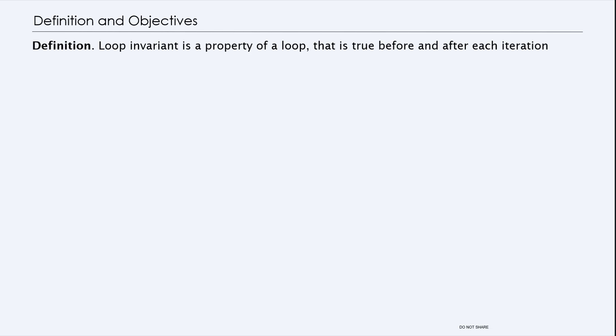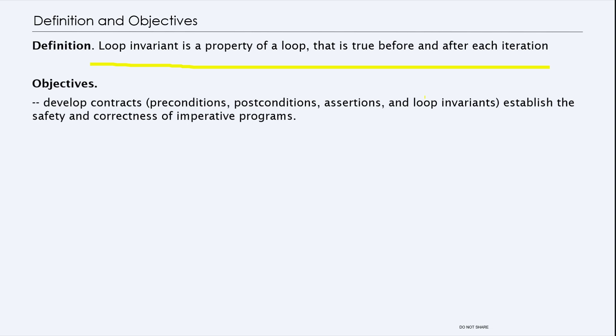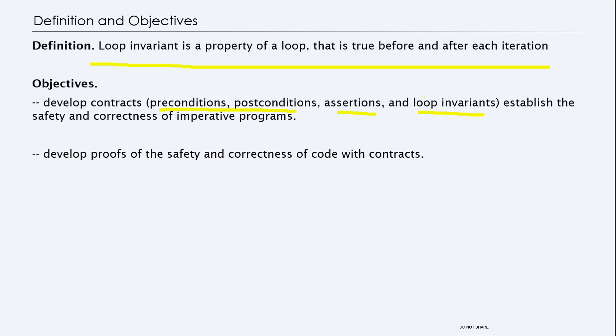Taking a look at the definition of a loop invariant: the loop invariant is a property that holds true at the beginning and after each iteration of the loop. Some of the objectives of this lecture are developing what we call contracts, which contains pre-post conditions, assertions, and loop invariants. All these conditions, which are Boolean statements, allow us to establish the correctness of the algorithm.